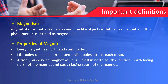Properties of magnet — a magnet shows different properties. The first one is every magnet has a north and south pole. Like poles repel each other and unlike poles attract each other. A freely suspended magnet will align itself in a north-south direction, with north facing towards the north and south facing towards the south.